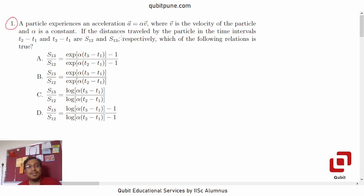A particle experiences an acceleration a bar equal to alpha v bar where v bar is the velocity of the particle and alpha is a constant. If the distances travelled by the particle in the time intervals t2 minus t1 and t3 minus t1 are s12 and s13 respectively, which of the following relations is true?